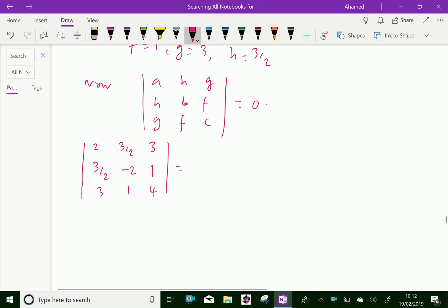Now, which is equal, expanding: 2 into (-8 - 1) - 3/2 into (6 - 3), plus 3 into (3/2) minus plus 6.